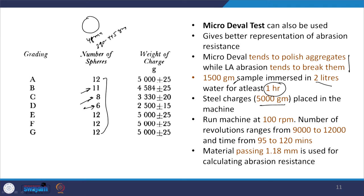We then allow the machine to run. Here also the machine rotates about the horizontal axis at 100 rpm, and the number of revolutions ranges depending on the size of the aggregates — from 9000 to 12000 revolutions — with time ranging from 95 to 120 minutes. After completion of the abrasion process, we take out the material and pass it through a 1.18 mm sieve. Material passing the 1.18 mm sieve is used to calculate the abrasion resistance.